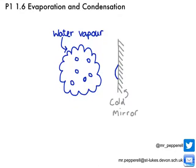For particles to exist in their gaseous state they need a lot of energy — they need to be very energetic, moving around very fast with a lot of kinetic energy. But when some of these fast-moving particles come into contact with a cold mirror, some of that energy is transferred to the cooler mirror, because heat energy is always transferred from areas of relatively high to relatively low temperature.